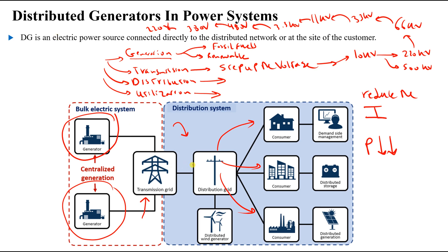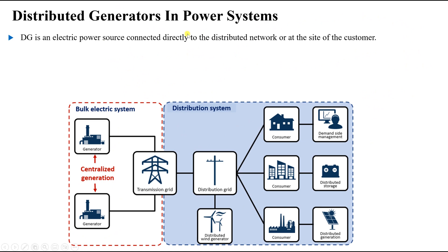We have distributed generation in the distribution network when we take a wind generator or a photovoltaic (PV) system that provides electrical power to — or is connected to — the distribution grid. In this case, we have a distributed generator. It is connected directly to the distribution network, or at the customer's site, usually by the customer who provides this kind of power.